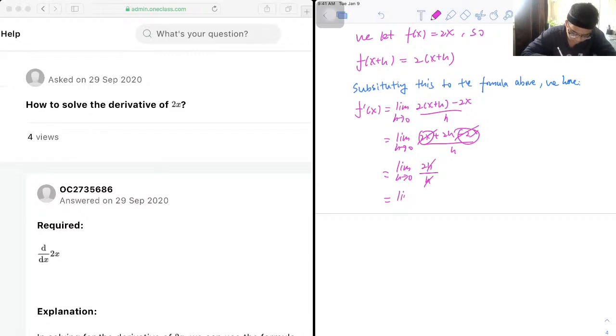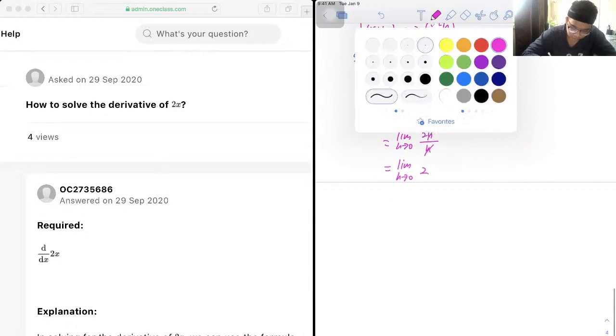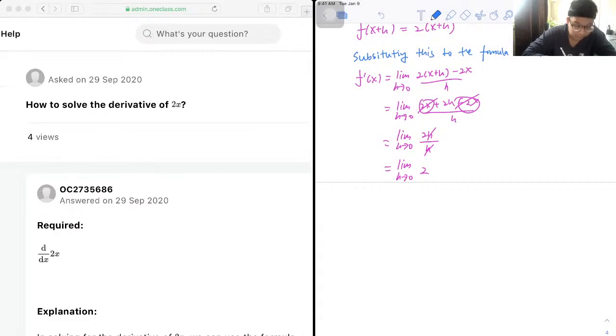Therefore, we only have 2 left, and we're recalling that the limit of a constant is the constant itself.